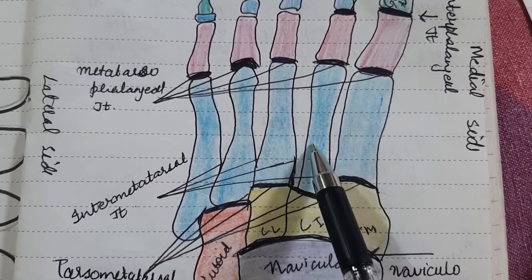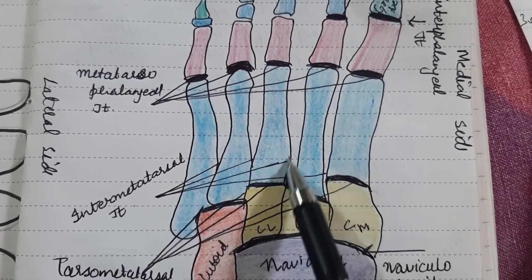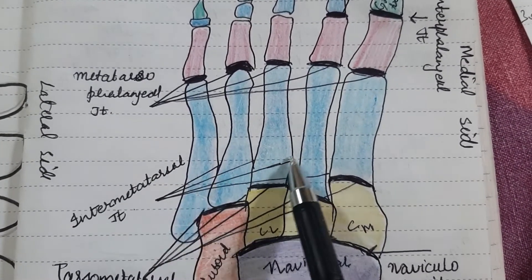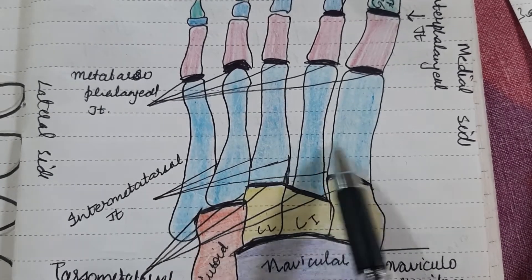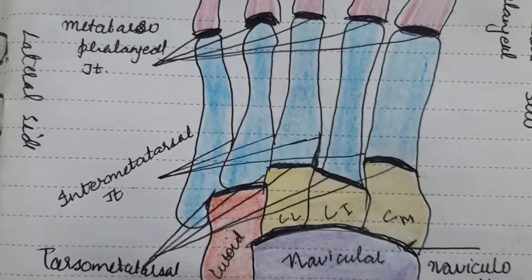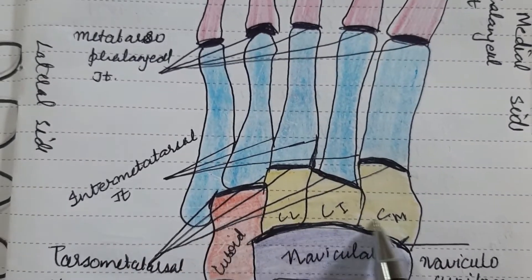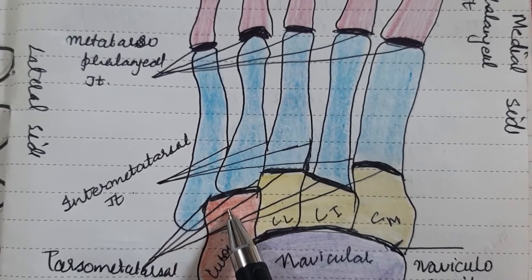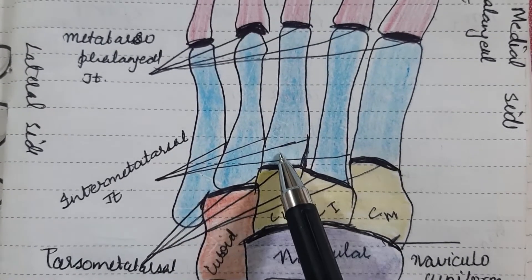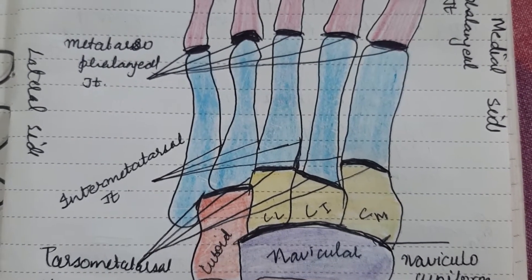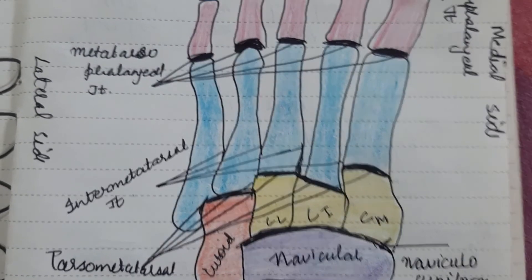Sorry for the drawing — these are all attached, forming the intermetatarsal joints. Finally, the tarsometatarsal joint: these are the tarsal bones and these are the metatarsals, so the articulation between the metatarsals and the tarsals is the tarsometatarsal joint. That was all about the forefoot and the end of the video.